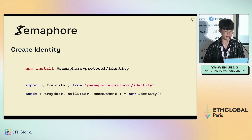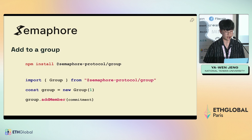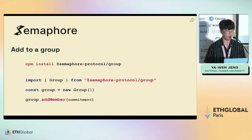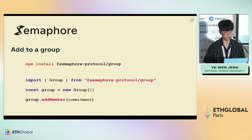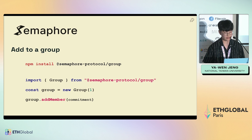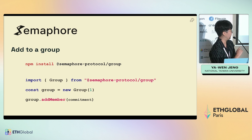This is basically how you create an identity. Then you can add your identity to a group — you install a package called Semaphore protocol group. You can create a group with a given index, and then add a member to this group with the add member function.